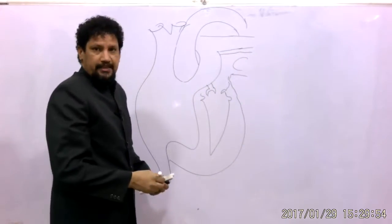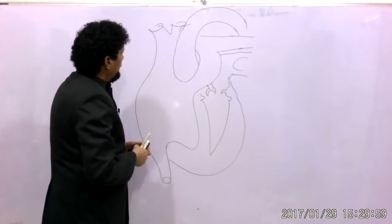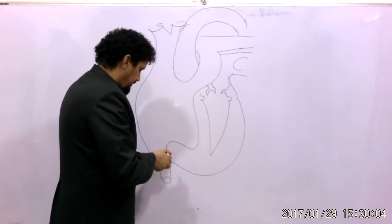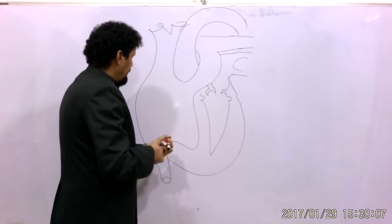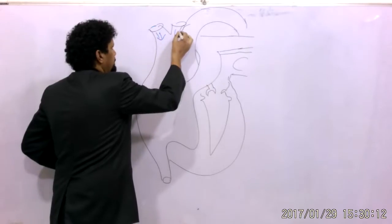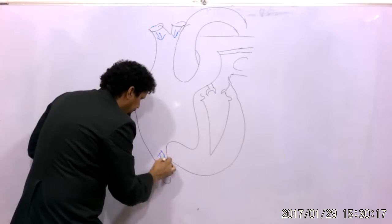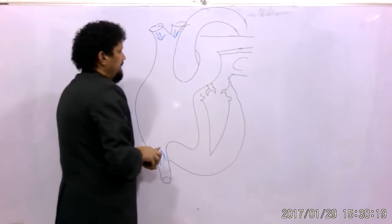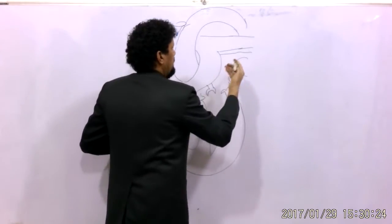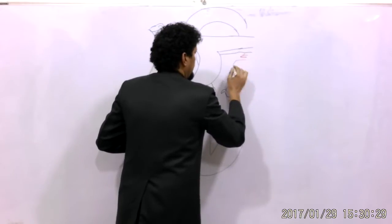Here we can see the anatomy of the heart. It has two atria — the right atrium and the left atrium. Both are receiving blood, but the blood in the right atrium is poorly oxygenated, while the blood in the left atrium is oxygenated, coming from the lungs.